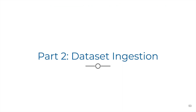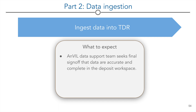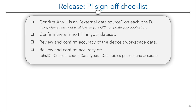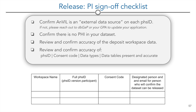Next is the dataset ingestion. Once all data has been successfully loaded into the deposit workspace, the Anvil support team will coordinate a final data submitter sign-off, then ingest the data into TDR. The Anvil support team will send a checklist to the data submitter. This is an example of the content they'll seek: confirm Anvil is an external data source on each FIS ID; confirm there is no personal health information in the dataset; review and confirm the accuracy of the deposit workspace data as well as the FIS ID consent code data types. The team will make sure data tables are present and accurate. In addition to the checklist, the data submitter would also complete a table and designate a person to confirm that the dataset is complete and can be released. This acts as a final signature.